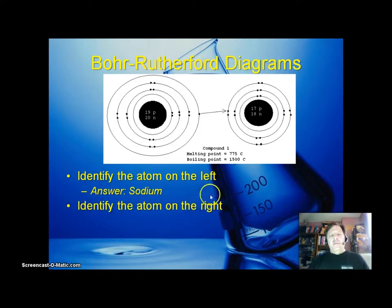Identify the atom on the right. The atom on the right has 17 protons, meaning atomic number 17, and so it's chlorine.